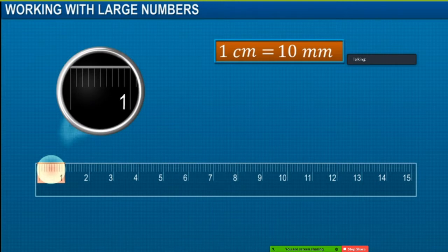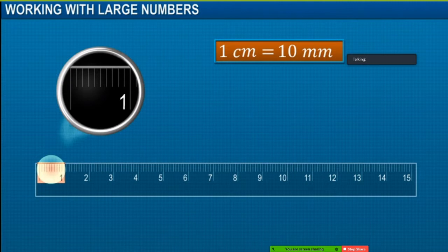To measure the distance between two cities, a higher unit of measurement, known as kilometers, is used. 1 kilometer is equal to 1,000 meters.